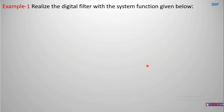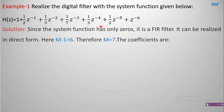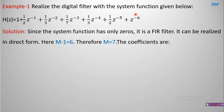Let us solve an example. Realize the digital filter with system function: H(z) = 1 + (1/2)z⁻¹ + (1/3)z⁻² + (1/7)z⁻³ + (1/3)z⁻⁴ + (1/2)z⁻⁵ + z⁻⁶. This has only zeros so it is a FIR filter. The highest power of the delay element is 6, so m-1=6, therefore m=7, which is odd.